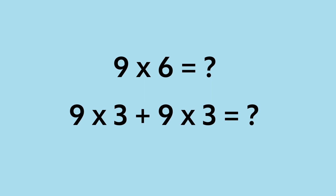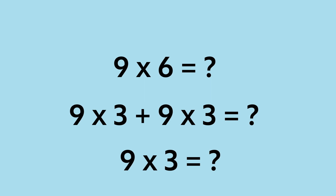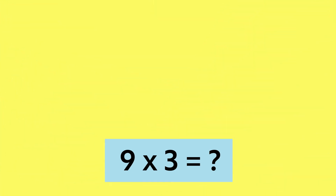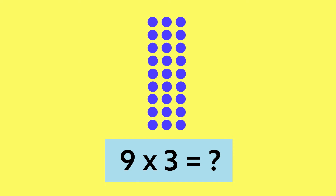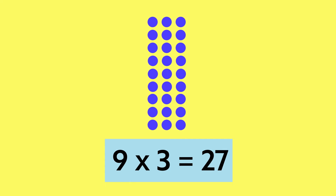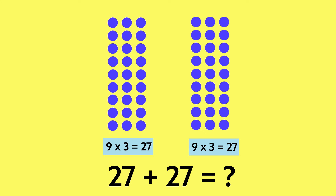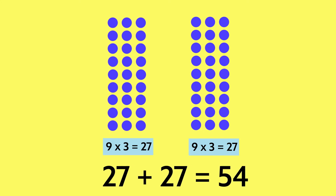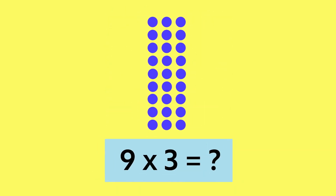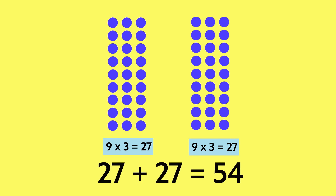So let's solve it. What is nine times three? Let's use an array to represent the multiplication for each group of nine times three. What is the product of nine times three? That's right — 27. Because we have two groups of nine times three, we have to represent that twice. Now we can add the products together: 27 plus 27 equals 54. We decomposed nine times six into nine times three plus nine times three to find the product of 54.